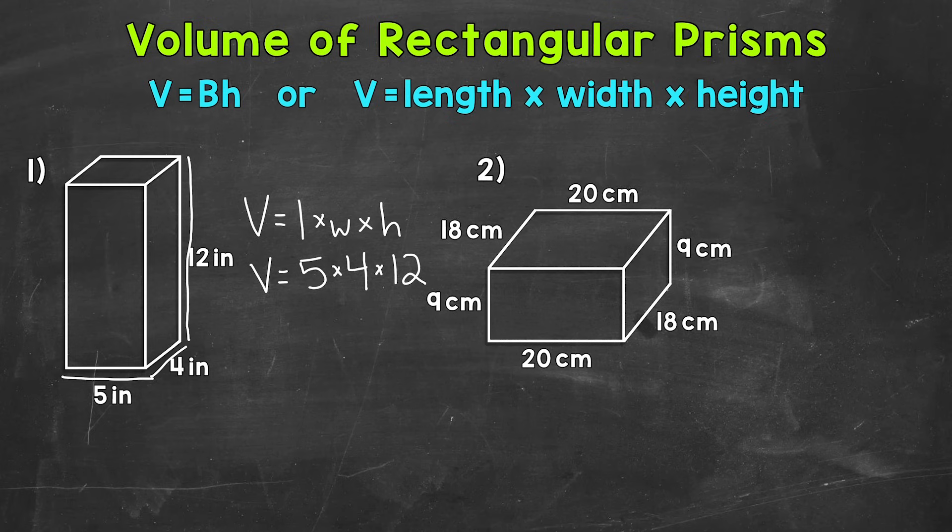So 5 times 4 times 12 is going to give us the volume of this rectangular prism. So let's do one step at a time here. 5 times 4 gives us 20. That's the area of our base. And then multiply it by the height of 12. So 20 times 12, that's going to give us 240.